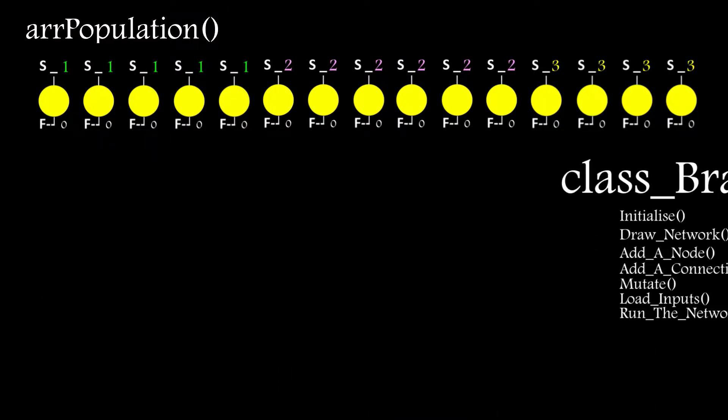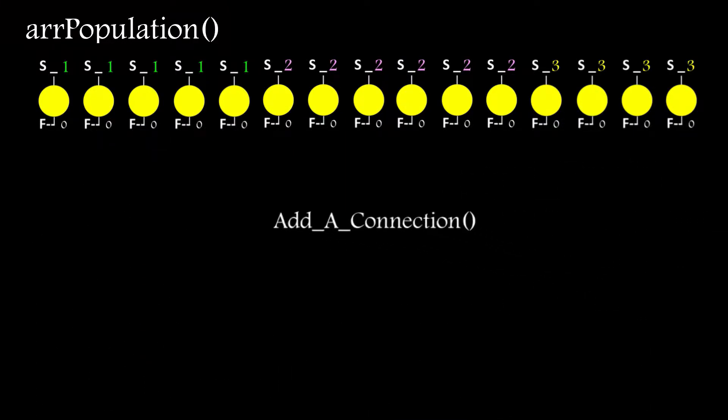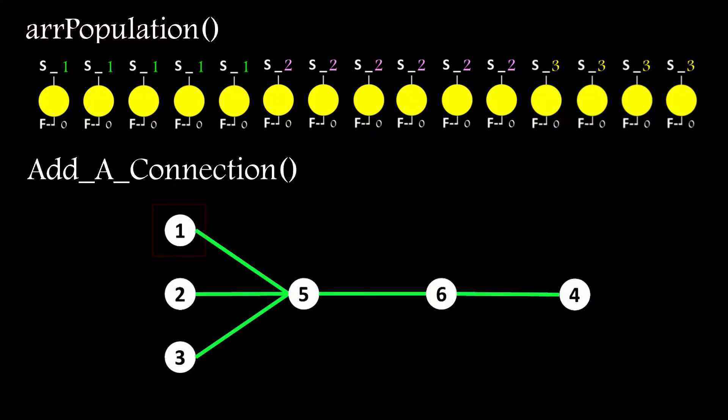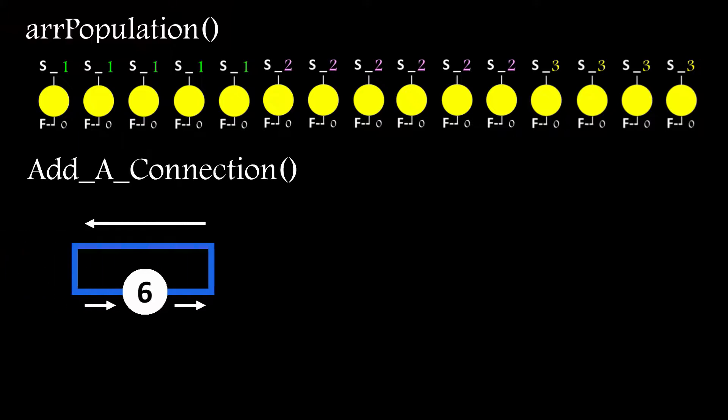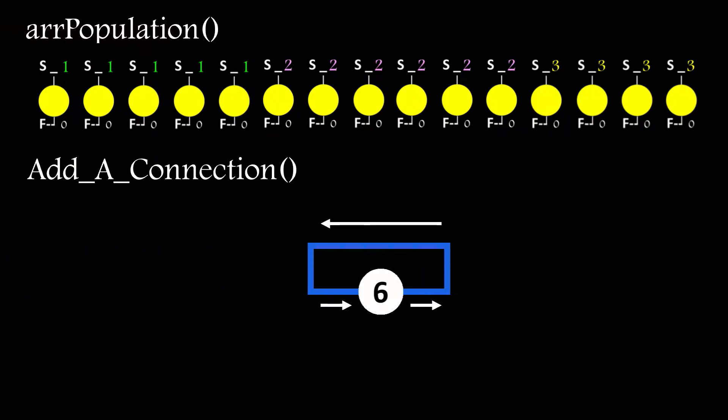Next up is adding a connection to the network. This is done by first selecting two nodes at random from the node array, and using those as the from and to nodes in the new entry that gets placed in the connection array. Of course, there have to be some validation steps to ensure it's a valid connection. There can't already be a connection between those nodes, you can't select the same node twice, or you'll end up with a recurrent connection back to the same node. The input to this node would tend towards infinity over time if the weight value goes over 1, so we don't allow that.